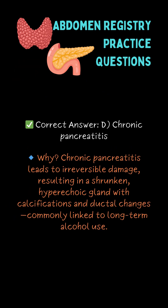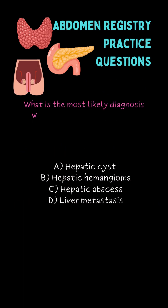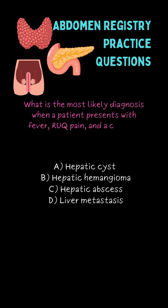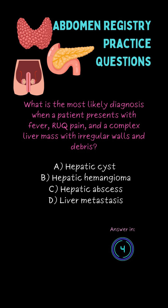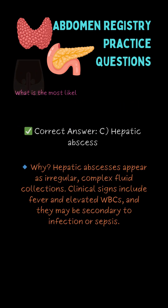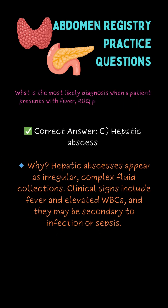What is the most likely diagnosis when a patient presents with a fever, right upper quadrant pain, and a complex liver mass with irregular borders and debris? C. Hepatic abscess.